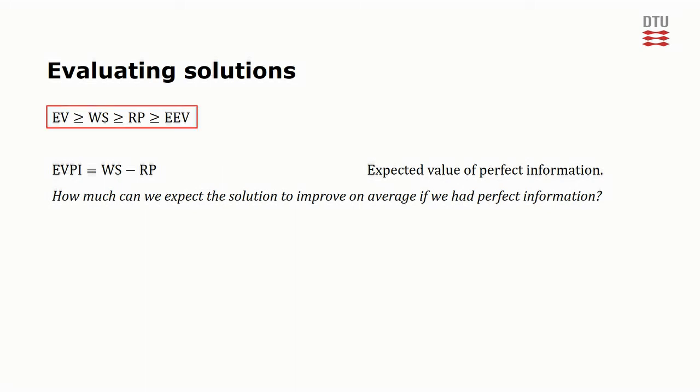Instead we use their internal relation to determine bounds on EVPI. Having an upper bound on the potential gains from having perfect information can be beneficial. And since EV and EEV are both much easier to solve than RP, this upper bound can easily be calculated.